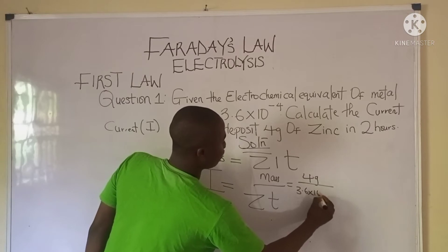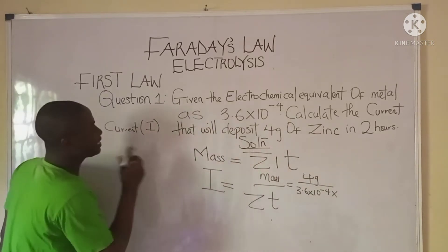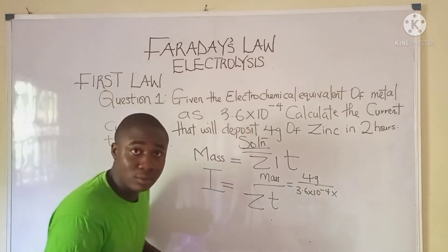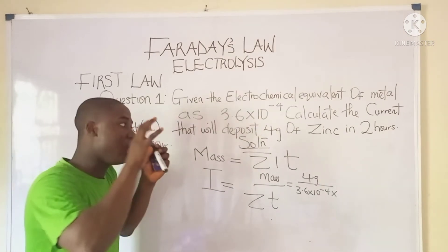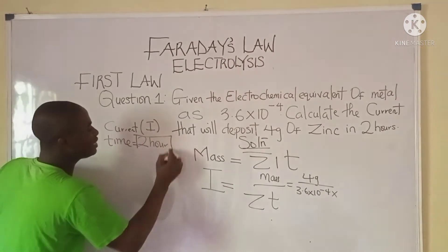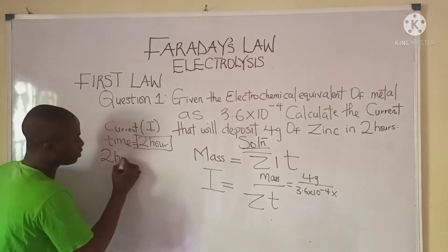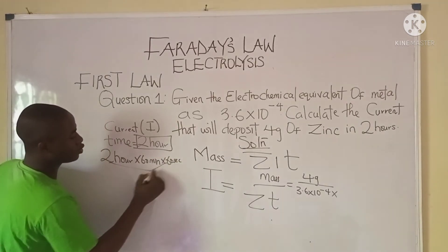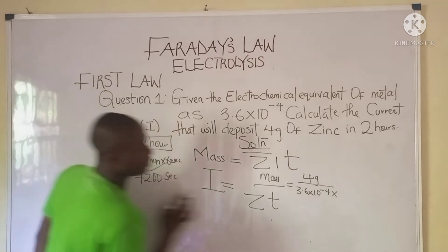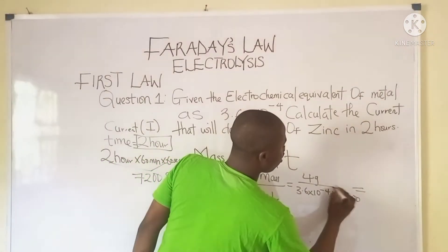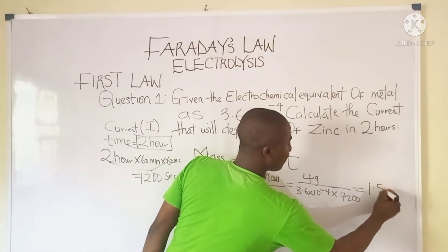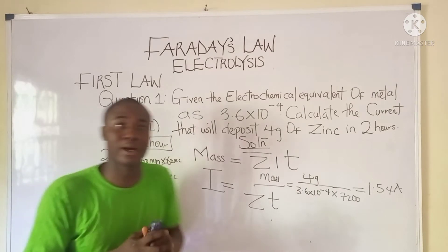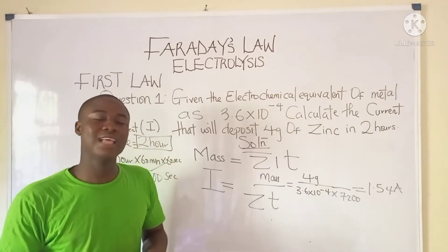The mass is 4 grams, z is 3.6 × 10⁻⁴, and the time is 2 hours. Time must be in seconds, so converting: 2 hours × 60 minutes × 60 seconds = 7200 seconds. Inputting these values, the current becomes 1.54 amperes.